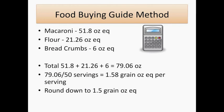The last step is to add up all of the grain ounce equivalents for the whole recipe and divide by 50 servings. The macaroni plus the flour plus the breadcrumbs gives us a total of 79.06 ounces of grain. Divide that by 50 servings and we get 1.58 grain ounce equivalents per serving. We round down to the nearest quarter of an ounce and find that this recipe provides 1.5 grain ounce equivalents per serving.